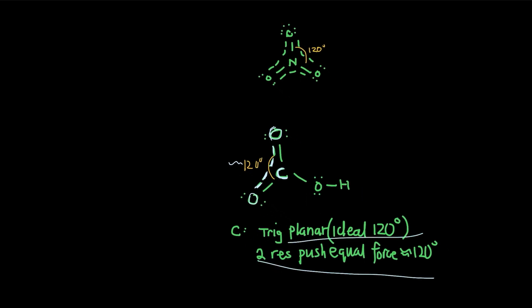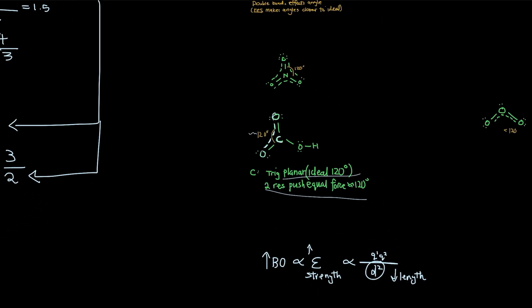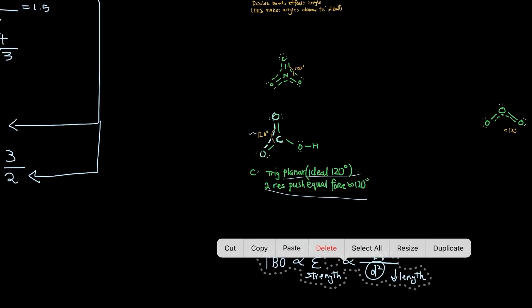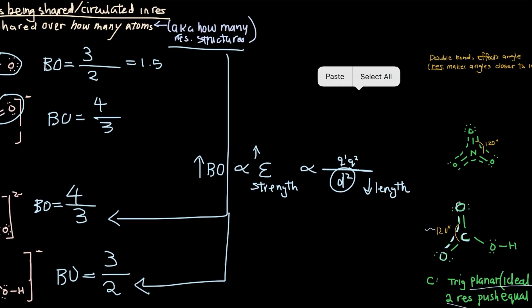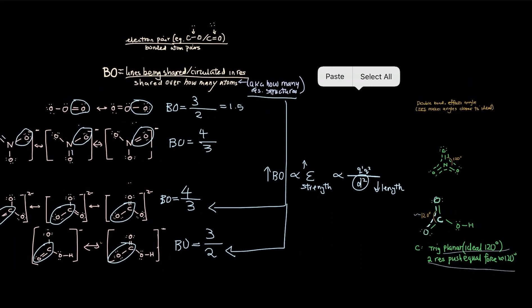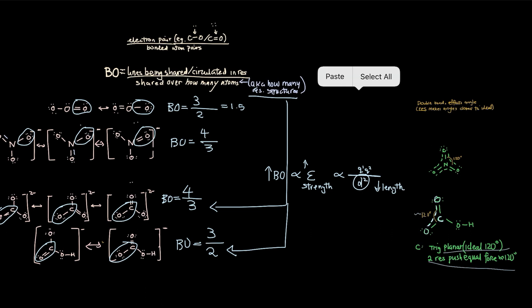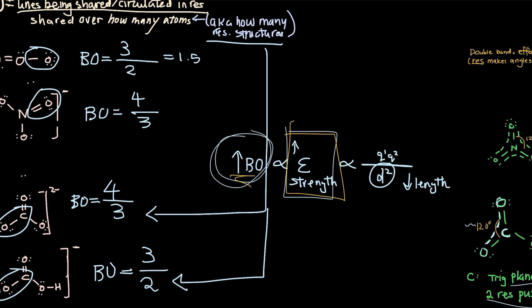Now one more question that tests might ask you about resonance structures and bond orders. It is bond order related to strength of bond. So now they might just give you a compound and a few compounds and say rank them in increasing strength. So when they say rank them in increasing strength, that means you want to find their bond order. If they ask you rank these molecules in order of increasing strength, first thing you think about is calculating their bond orders.